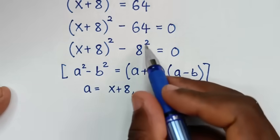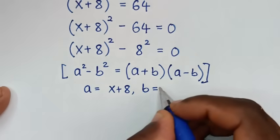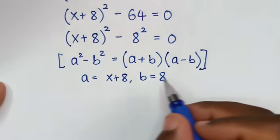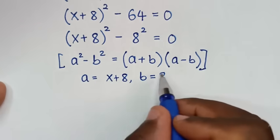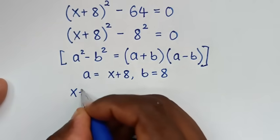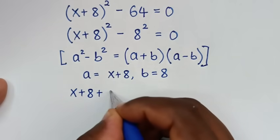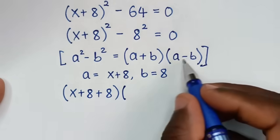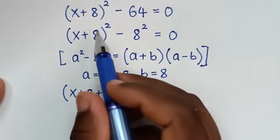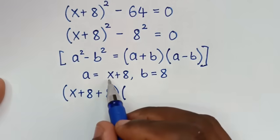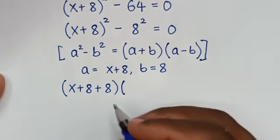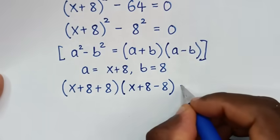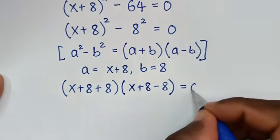When we compare b² with 8², then b = 8. Then we'll apply the form (a + b)(a − b): it will be (x + 8 + 8)(x + 8 − 8) = 0.